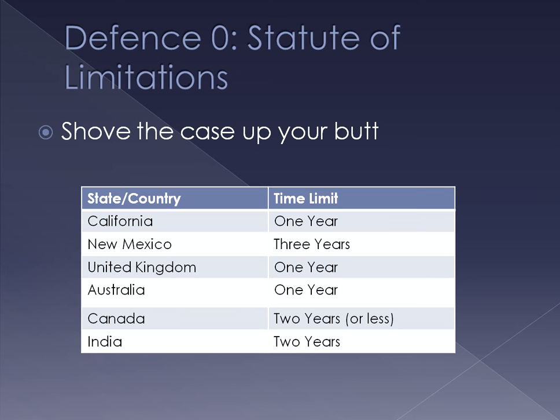For example, if you publish something a year ago that trashes someone's reputation, and they don't bother to do anything about it for three years, and then they say they want to sue you — well, you've left it too late. So don't even bother defending the case if it's outside the statute of limitations; it's just gone, there is no case.